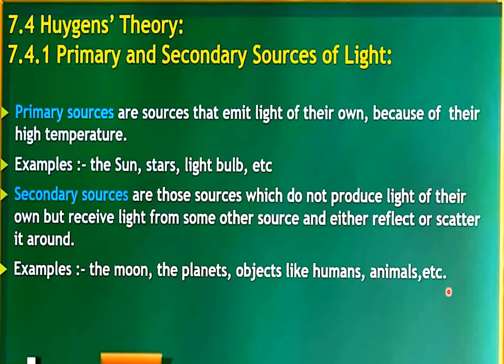Examples of secondary sources include the moon, planets, and objects like animals — all these are secondary sources of light.